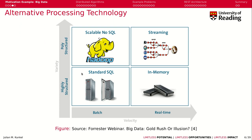There are several alternative processing technologies. In terms of velocity, we distinguish batch and real-time processing. Real-time is obviously the fastest we can have. We also have the dimension of variety from the five Vs on the y-axis. If we have highly structured data and batch processing, SQL works very well — if you have petabytes of highly structured data, you can load it into a SQL database and process it. It will take a long time, but it's suitable for batch processing.